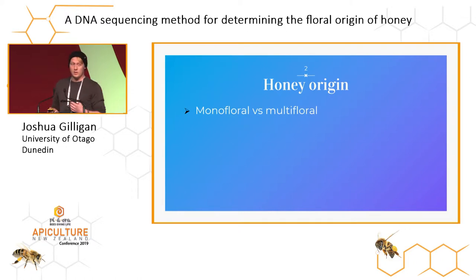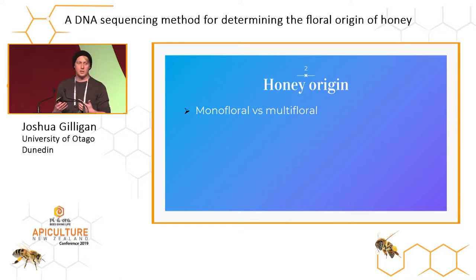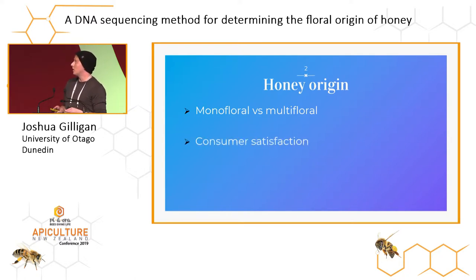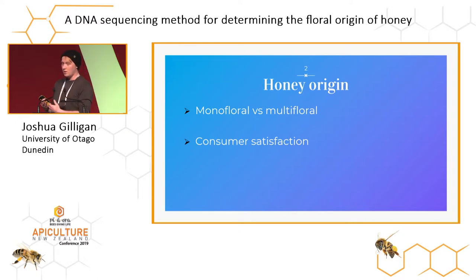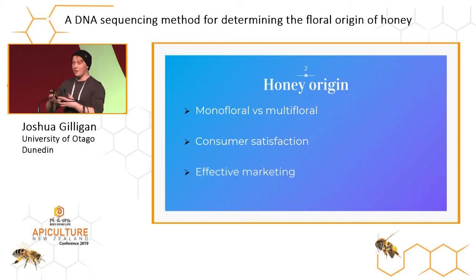Over the years, consumer demand has increased for a lot of these monofloral varieties, especially in New Zealand, because of some of those health benefits like Manuka. Leaning into these monofloral demands is going to help increase consumer satisfaction, and knowing what plants have been used to make honey and being able to scientifically back that up is going to be really good for your marketing.